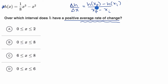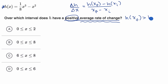They aren't asking us to calculate this for all of these different intervals — they're just asking us whether it is positive. As long as our x final is greater than x initial, in order to have a positive average rate of change, we just need to figure out whether h at x final is greater than h at x initial. If the value of the function at the higher endpoint is larger than at the lower endpoint, then we have a positive average rate of change.